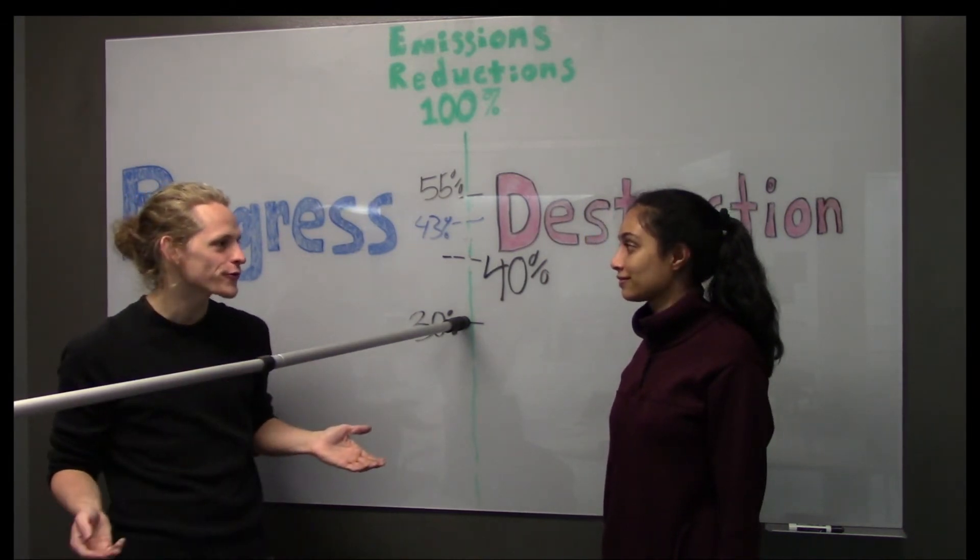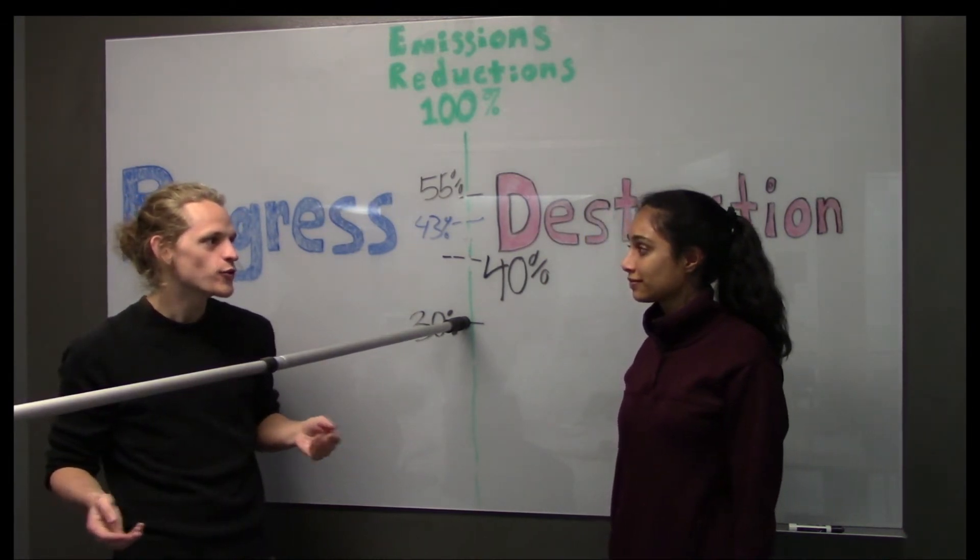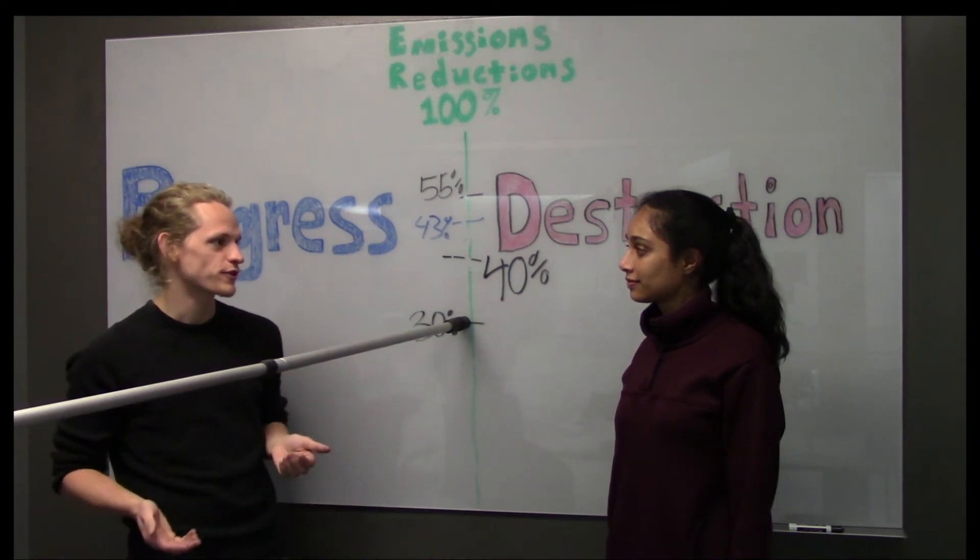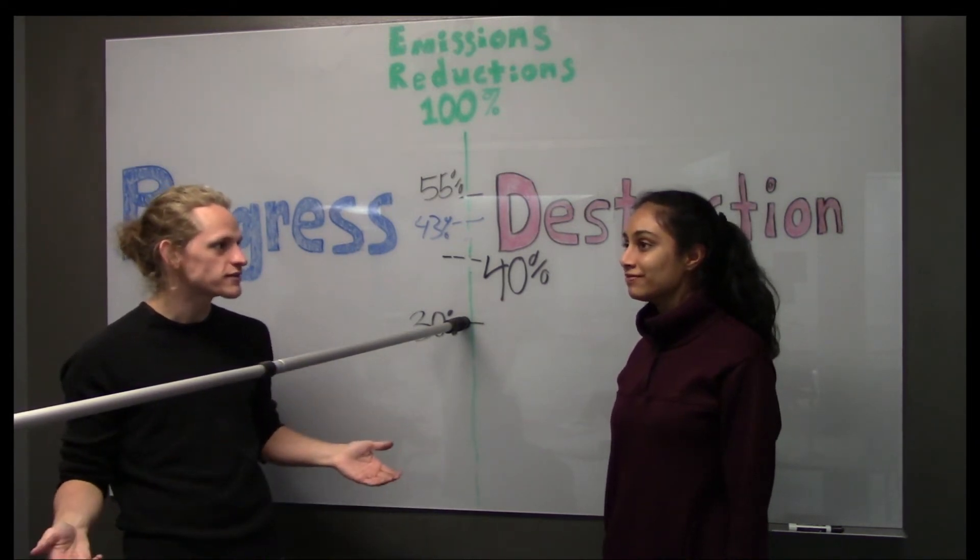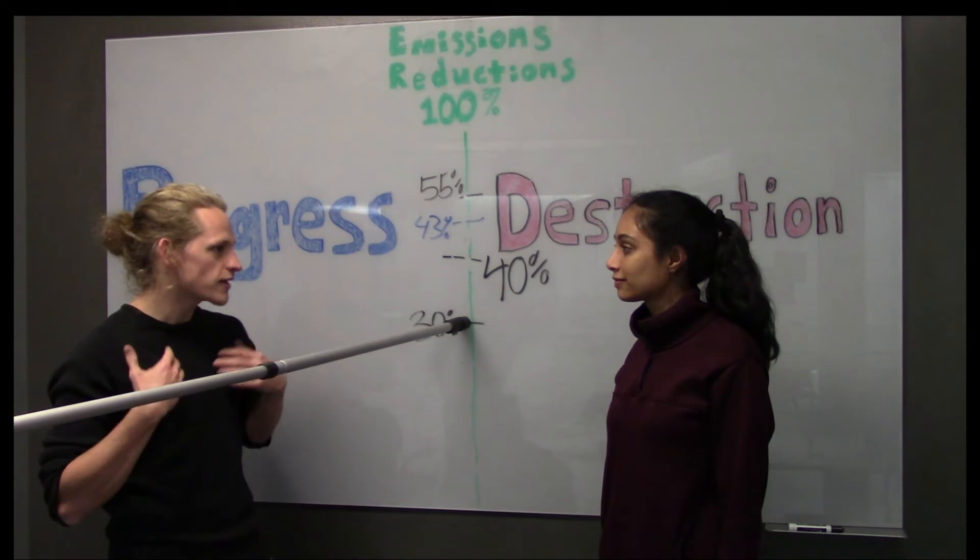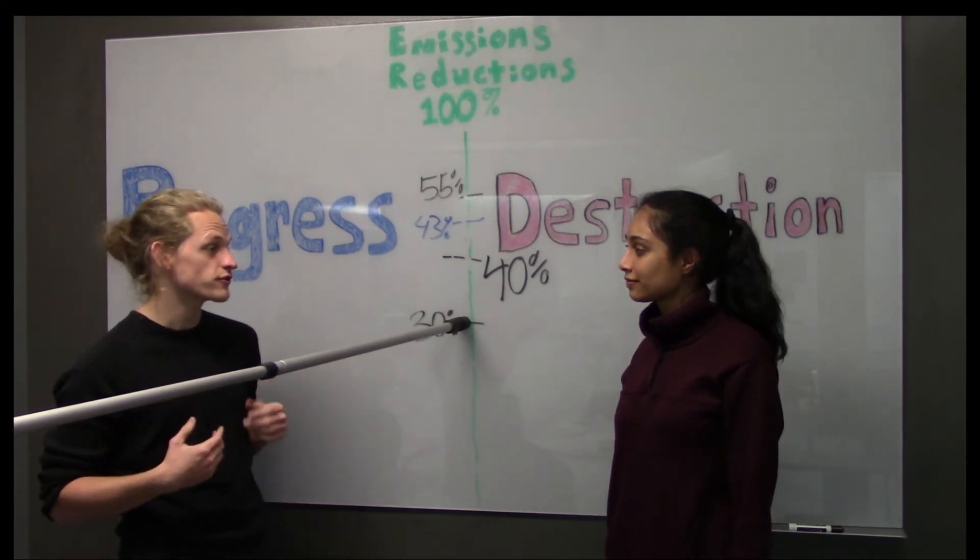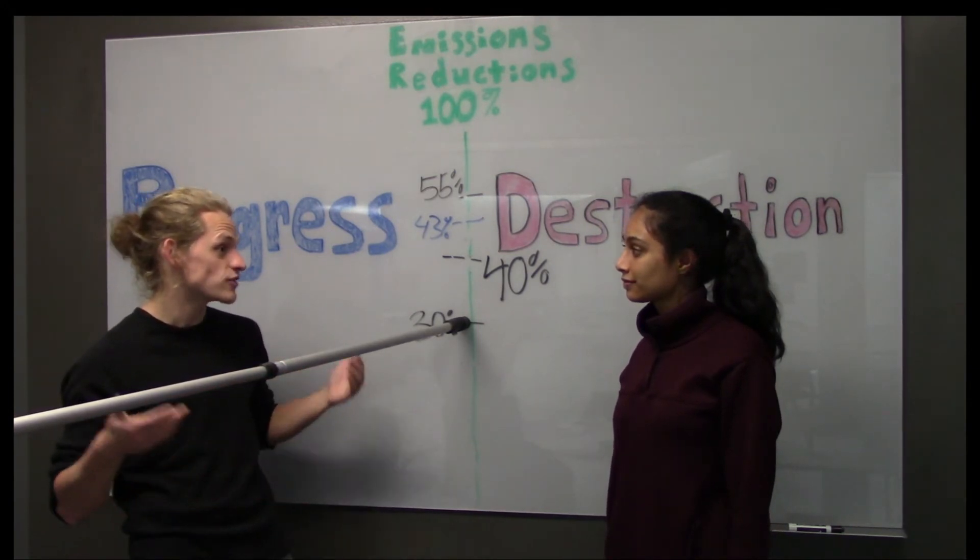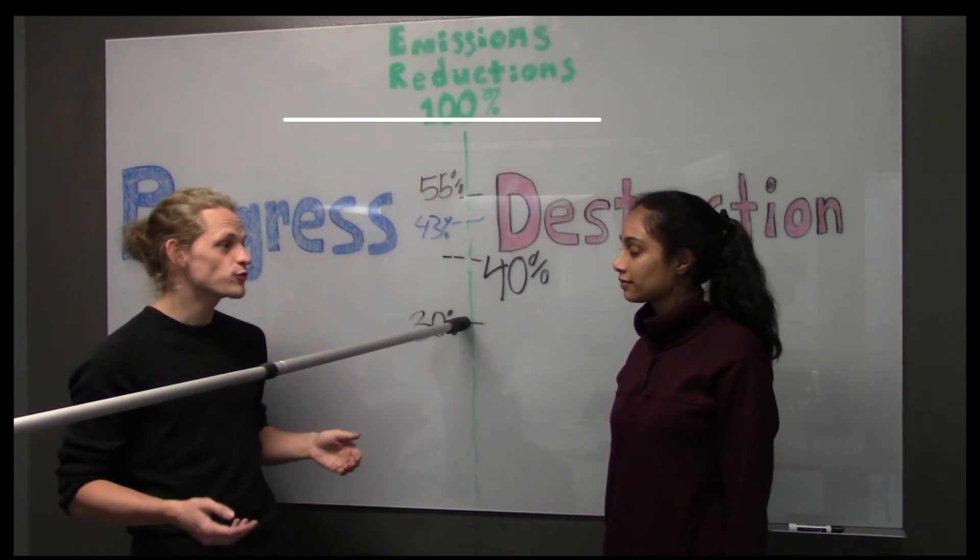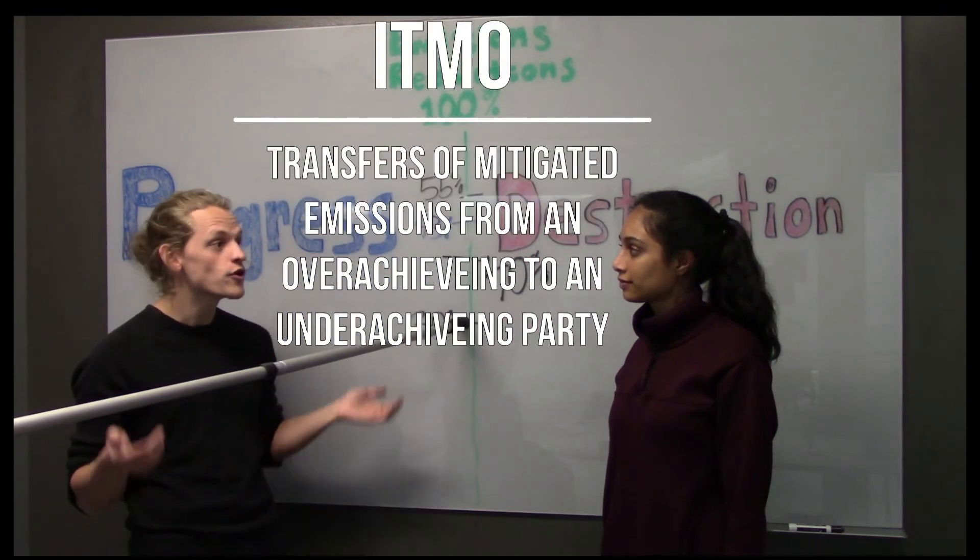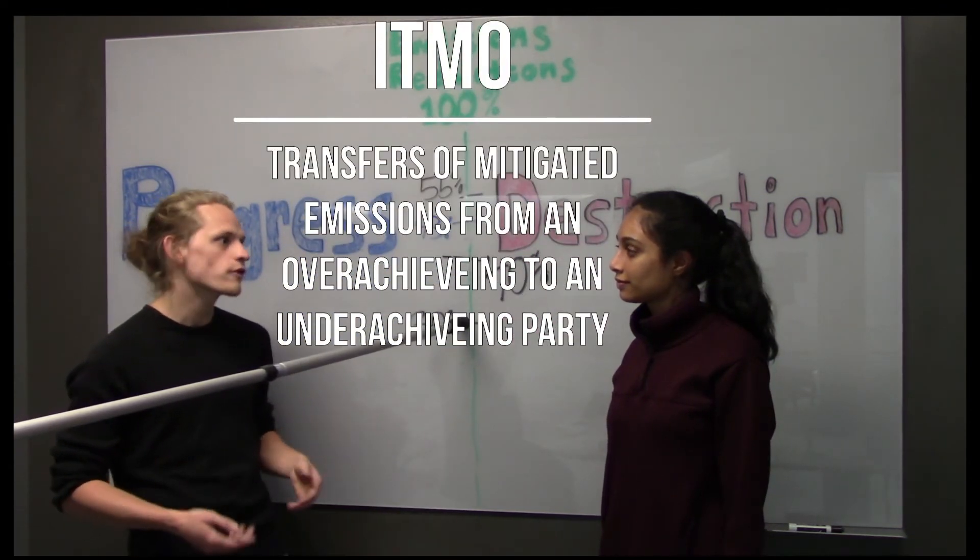Actually, yeah. So under Article 6-2 of the Paris Agreement, we can actually trade our emissions reductions to help us achieve our NDC. So when one party like me trades an emission reduction to another party like you that hasn't achieved their NDC, that's referred to as an Internationally Transferred Mitigation Outcome, or ITMO.